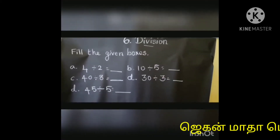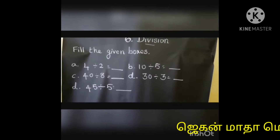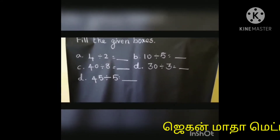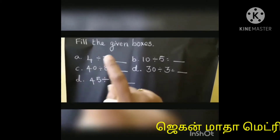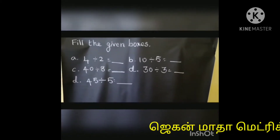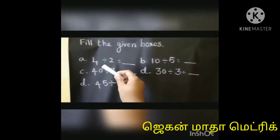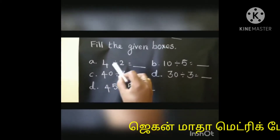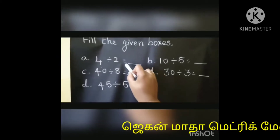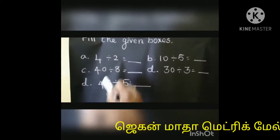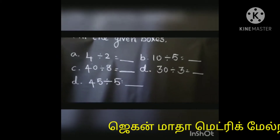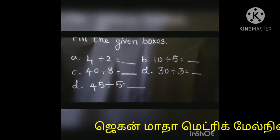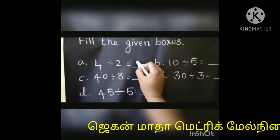Division. Fill the given box — you want to find the answer. It's a very easy sum because it's a single digit number divided by a single digit number. Let's see the first question: 4 divided by 2. It's very simple. In this sum, you are going to use the 2 table. You know 2 2's are 4, so the remainder is 0. Write 2.